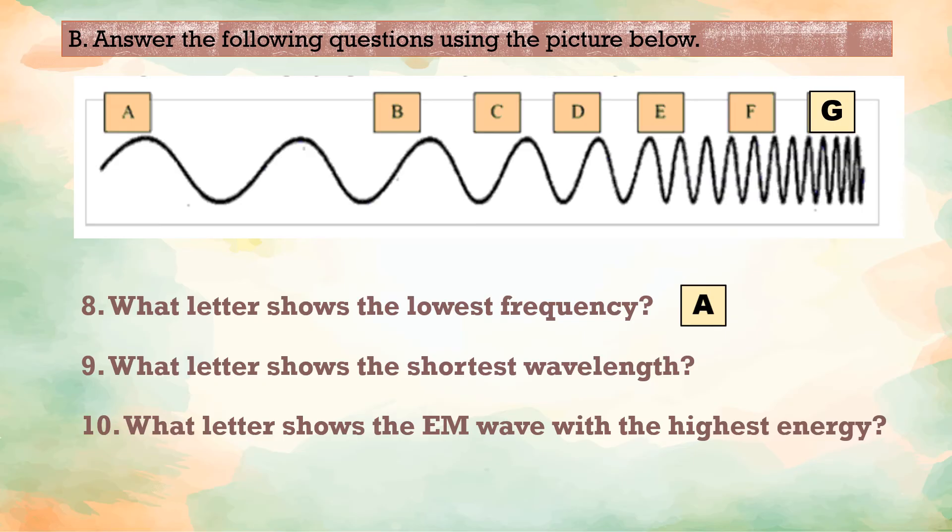Number 9, what letter shows the shortest wavelength? Choose from A to G. Very good! Letter G is the shortest wavelength.